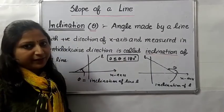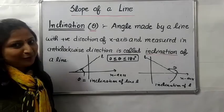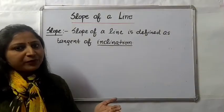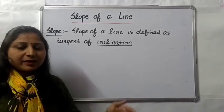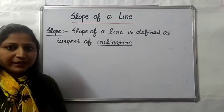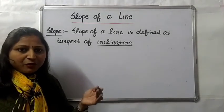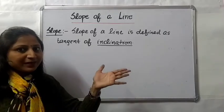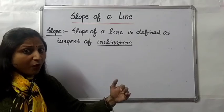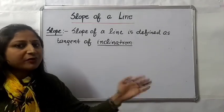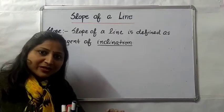The range of inclination is from 0 to 180 degrees. Now we come to the main concept, that is slope of a line. In order to represent the direction of a line, there is a number associated with that line called slope. Slope of a line is defined as the tangent of the inclination — that is, the tangent of the angle which the line makes with the positive direction of the x-axis.